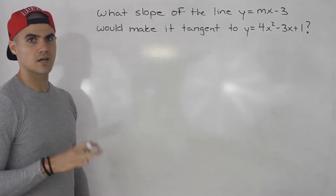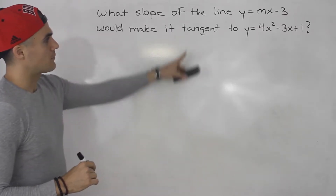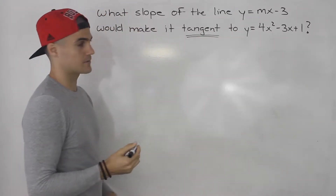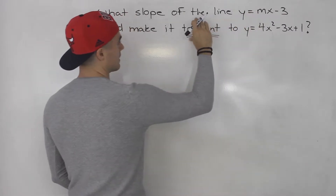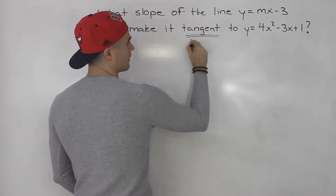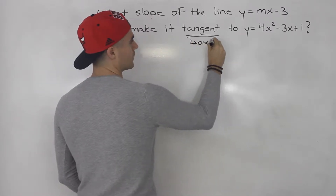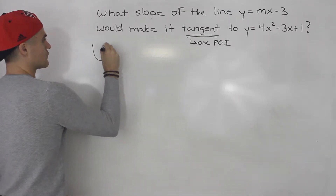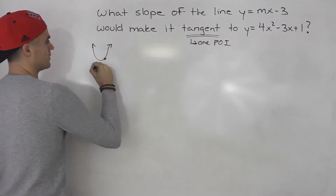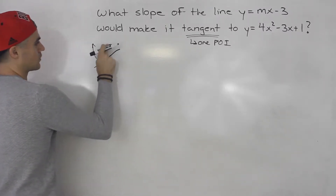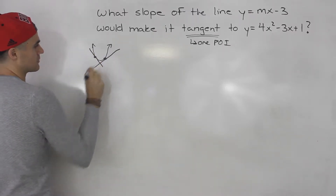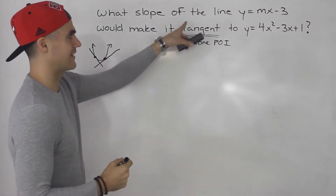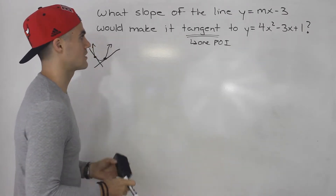This question is a little bit unique — we haven't done one like this yet. If you remember a couple videos back, when a line is tangent to a quadratic, they're saying they want the line to be tangent to this quadratic. That means there is one point of intersection. So if you have a quadratic like this, a tangent line would just be hitting that quadratic at one point. Whenever you see tangent, when a line is tangent to a quadratic, it means there's one point of intersection.